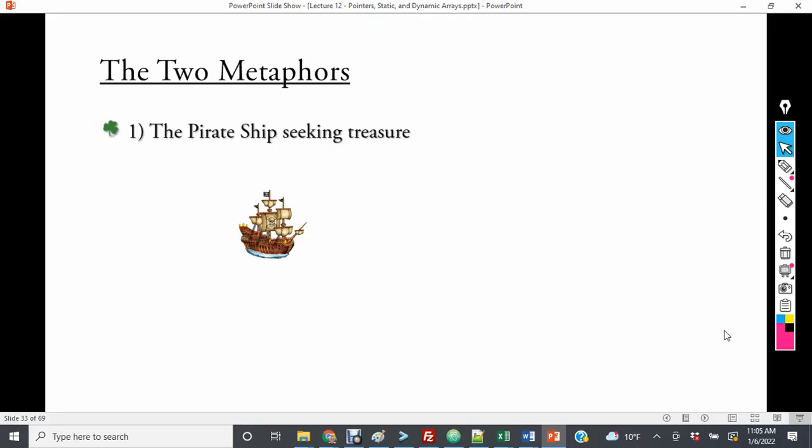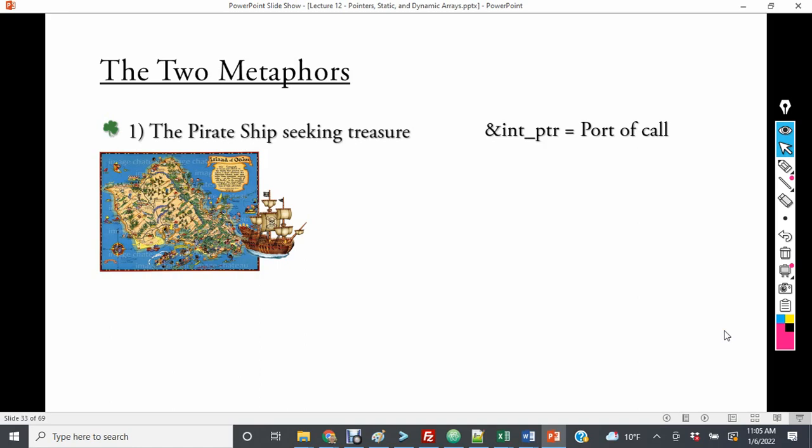The first metaphor for a pointer is a pirate ship seeking treasure. So here we have a pirate ship. In order to have a proper pointer, we have to have a port of call. Just like a pirate would have to have a place where they need to start, if they're going to go seek treasure, they have to have a place where they're going to take it back.